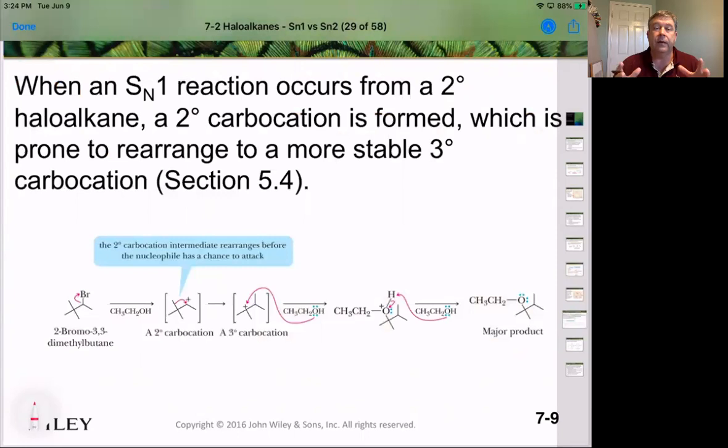When an SN1 reaction occurs from a secondary halo alkane, that means we form a secondary carbocation. What we learned in Chapter 5 was that tertiary carbocations are more stable than secondary carbocations, and therefore we might see a rearrangement if possible. Either a hydrogen will move one carbon over to give a more stable tertiary carbocation, or a methyl group will move over one carbon to give a tertiary carbocation. So we need to look for rearrangements whenever we're using those secondary alkyl halides.